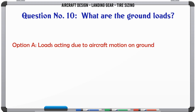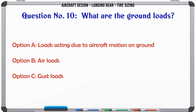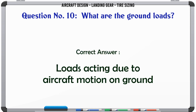What are the ground loads? A) Loads acting due to aircraft motion on ground, B) Air loads, C) Gust loads, D) Lift and drag. The correct answer is loads acting due to aircraft motion on ground.